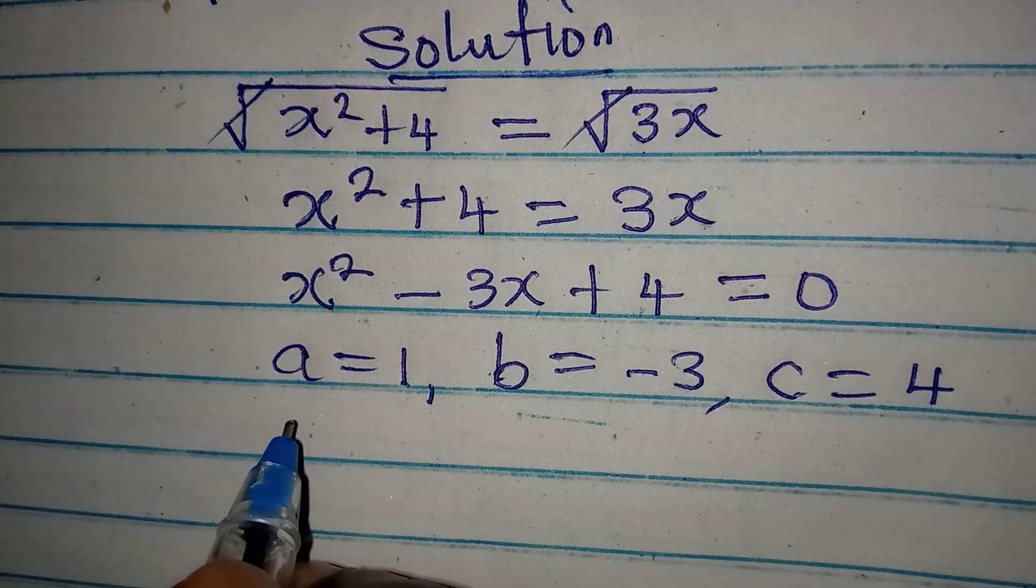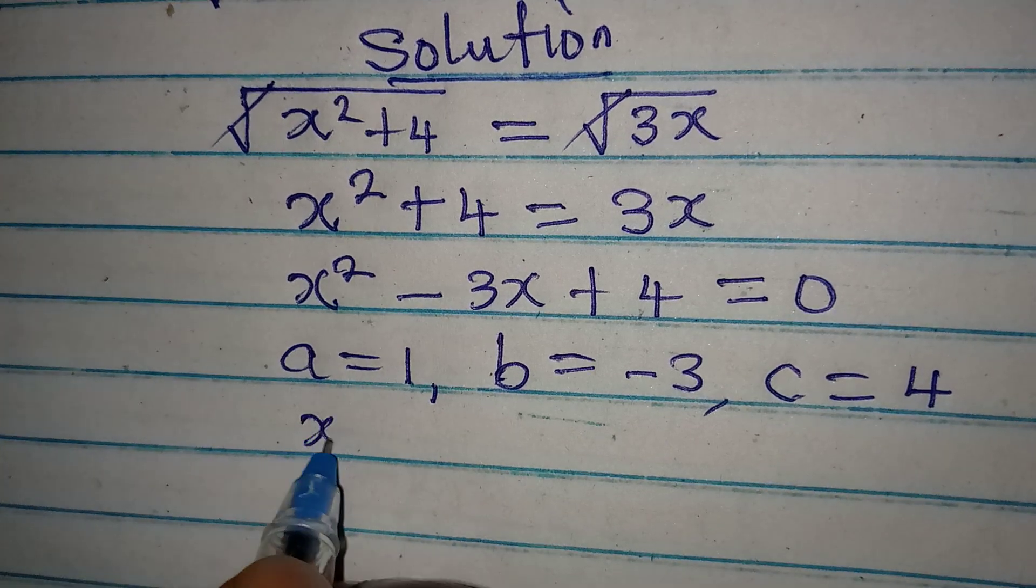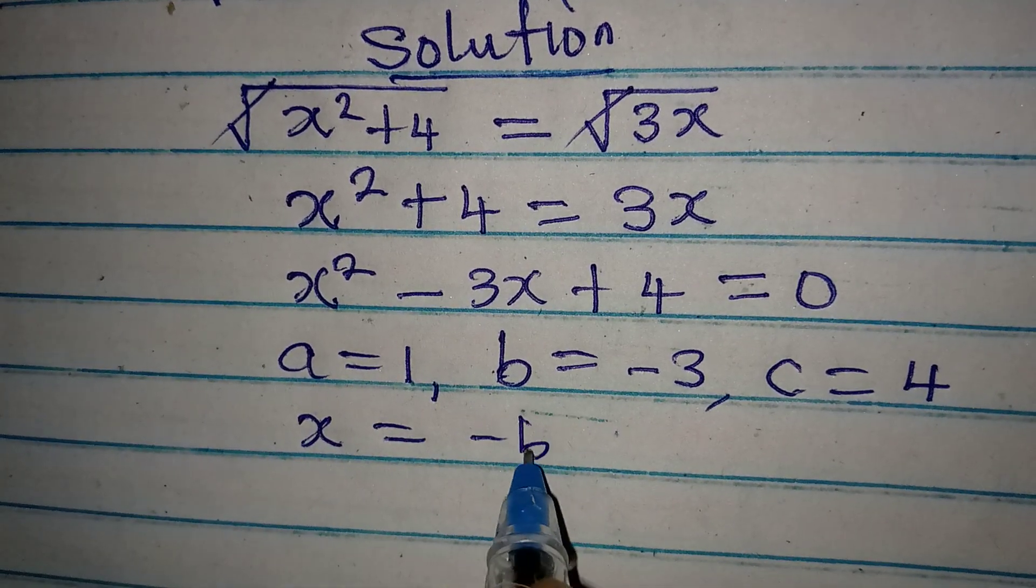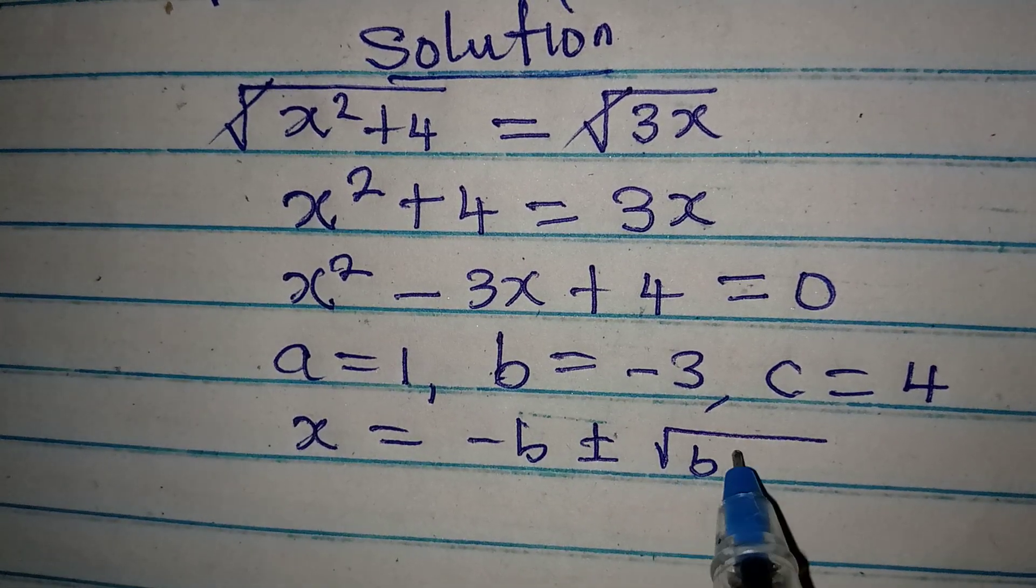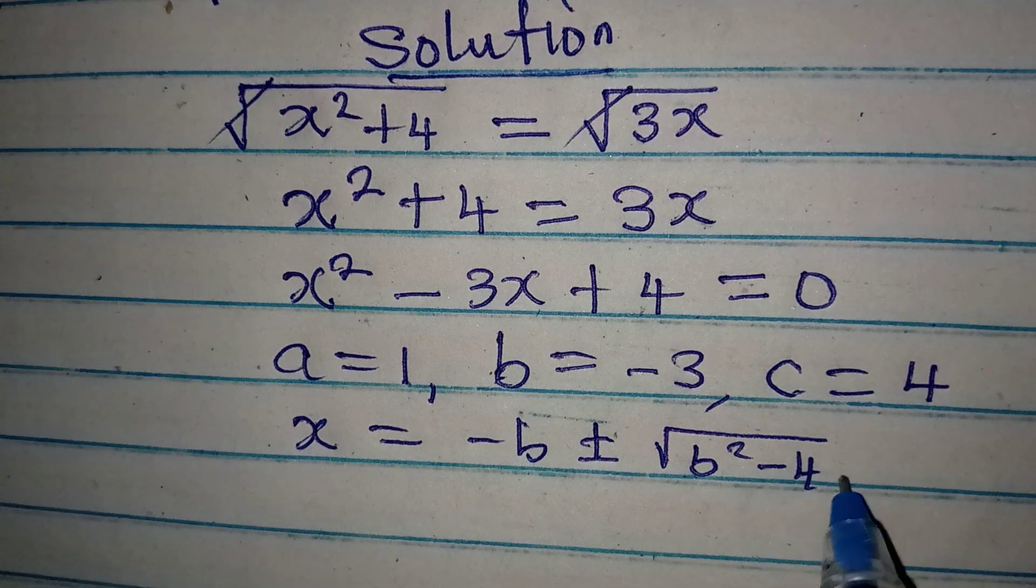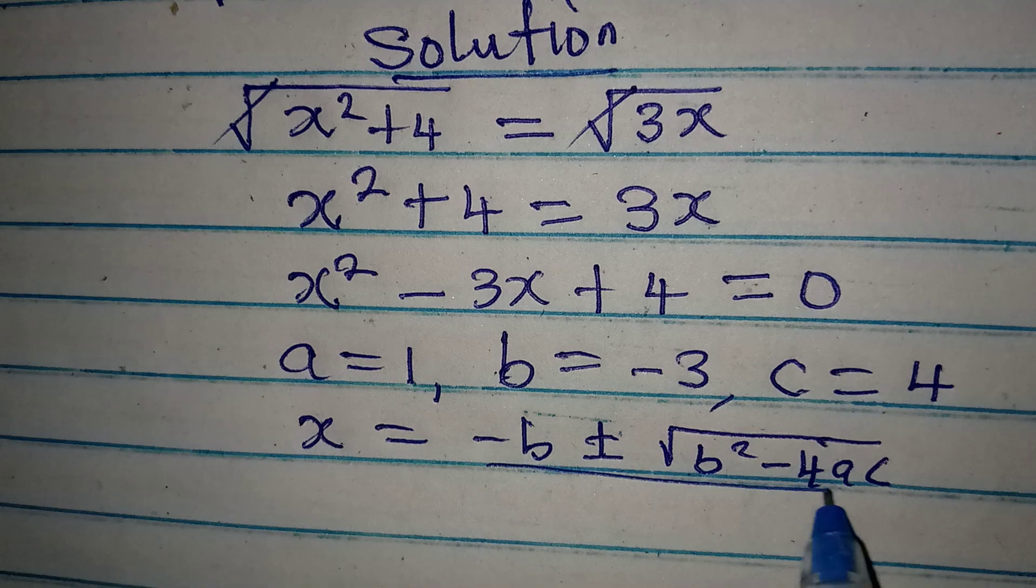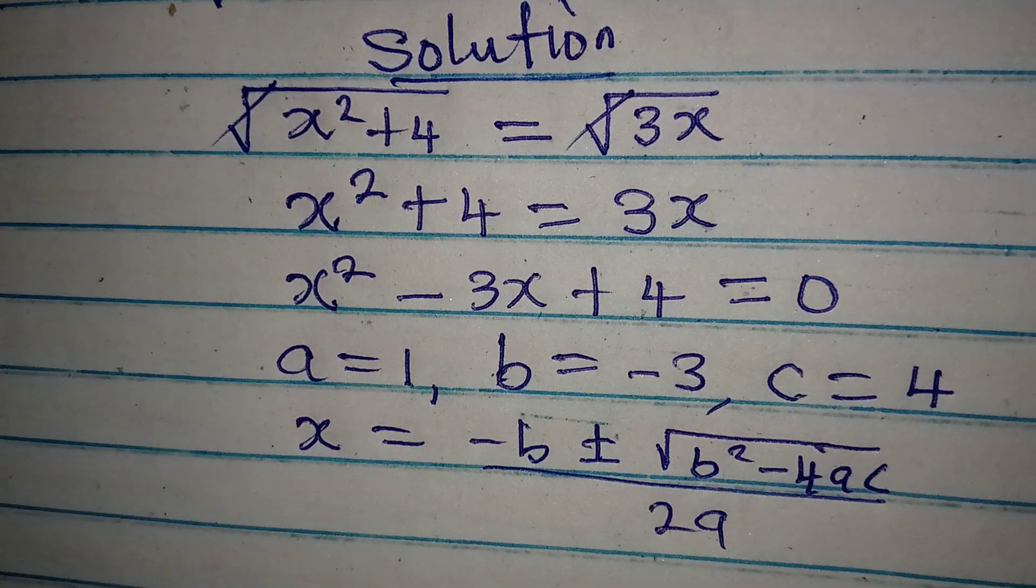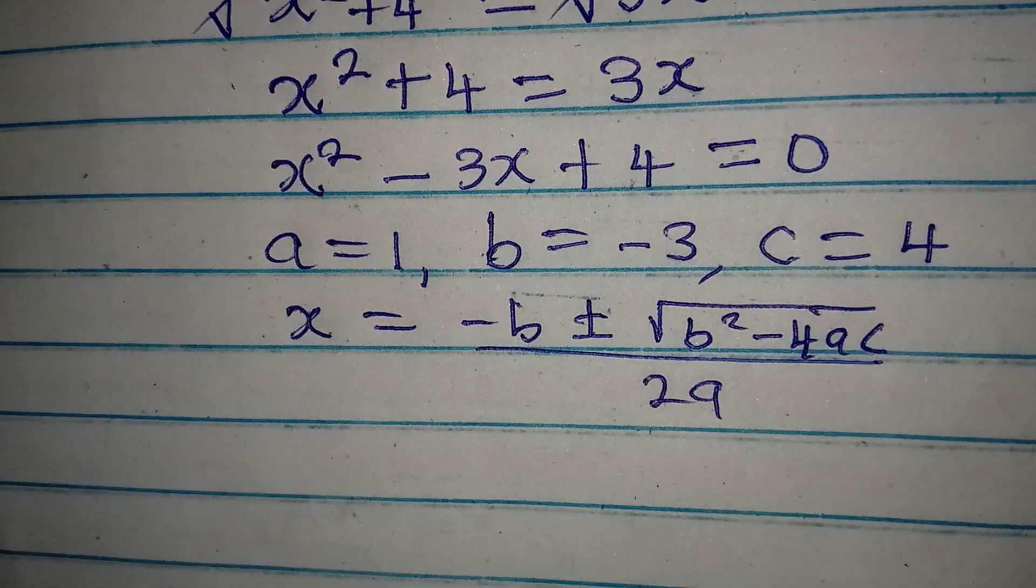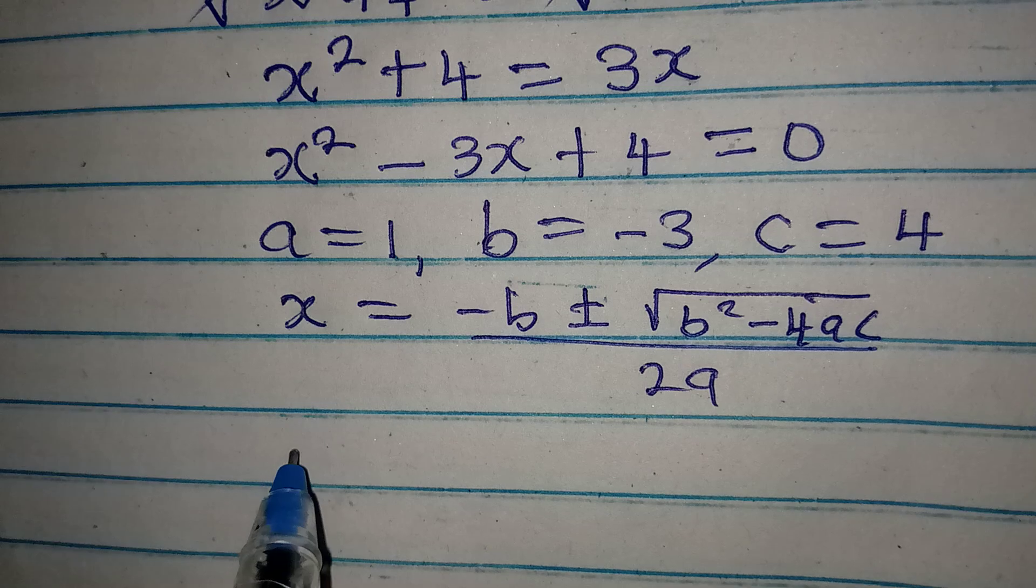Now, let's continue. From here, we will write the formula: x is equal to minus b plus or minus square root of b squared minus 4ac, and then all of this is over 2a. And from the look of things, this will not give us a real solution. But let's deal with it.